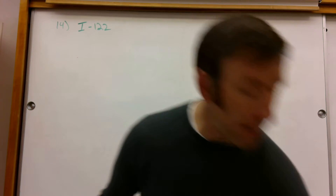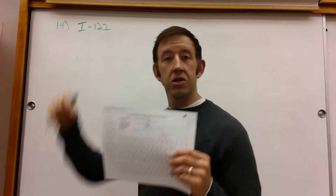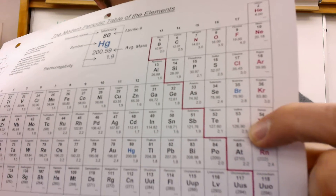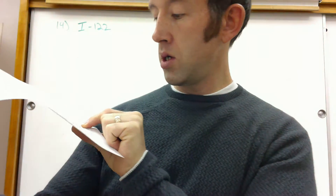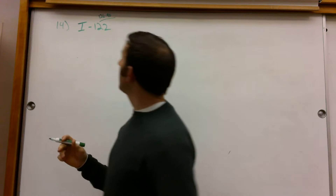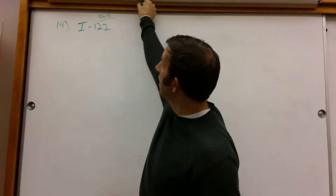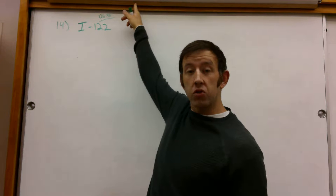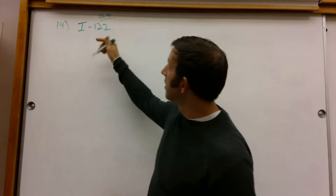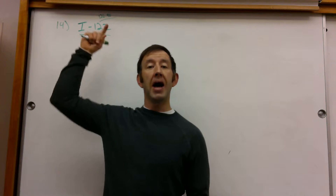Let's do this. Iodine-122. My favorite method, just because it's faster, is to compare iodine-122 to the average mass of iodine. I find iodine right there on the periodic table, and its average mass is 126.90. So with a comparison of 126.90 to 122, we should be able to tell that 122 is obviously lower. This isotope of iodine has a mass considerably lower than the average mass of iodine.